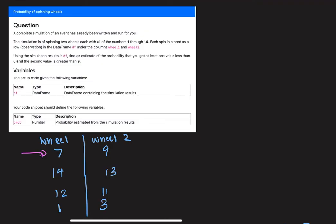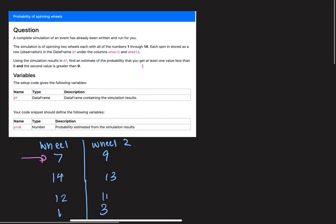When we have a data frame and we want to find a probability, we want to find the number of rows where our conditional—in this case, at least one value less than 6 and second value greater than 9—is true, and divide that by the total number of rows in our data frame. So first, we want to create a conditional and store that in a new data frame called DF success, where this conditional is true, and then we can find the length of that and divide it by the length of our original data frame.